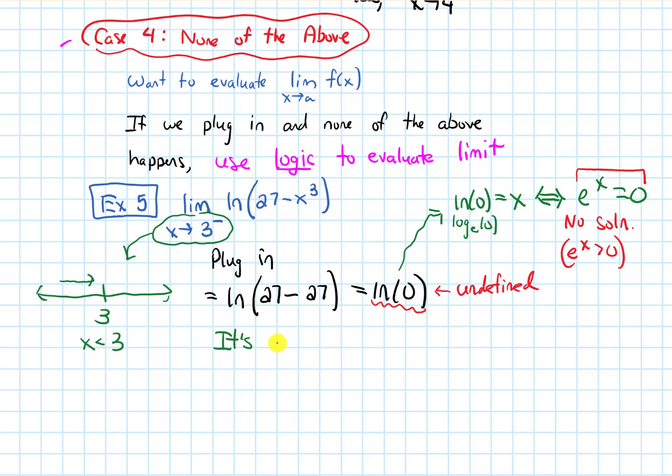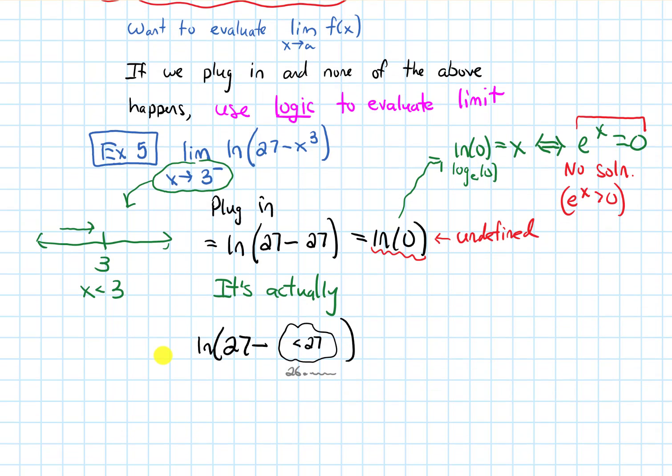So let's be more precise about plugging into this ln function now. When we plug in, what we're actually going to get is ln of 27 minus, and let me put a little bubble, close that parentheses. And because x is less than 3, when you cube it, that is going to be less than 27. So we're subtracting something less than 27. But it's getting close to 27. So maybe it's like 26 point something, but close to it. All right. So let's simplify that. So we get ln of, the thing inside the ln is really close to 0. But overall, it's a little bit bigger than it. So I write 0 with little plus sign.